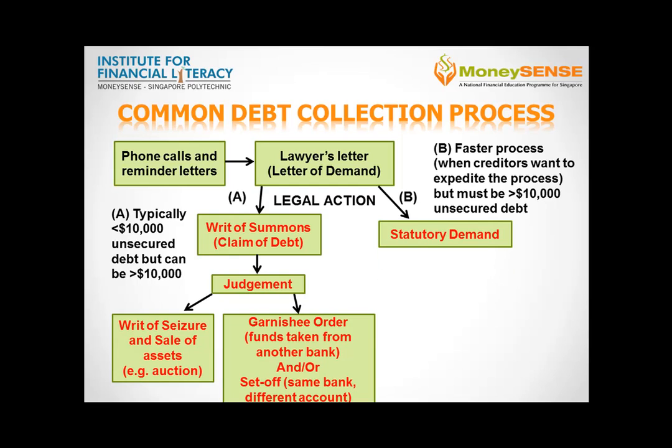A debtor must make voluntary arrangements to persuade the creditor from resorting to bankruptcy proceedings and settle debts wherever possible. The debtor must make an application for an interim order to stop all further proceedings against him within 14 days of receipt of the statutory demand.